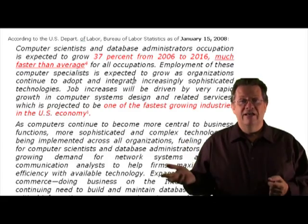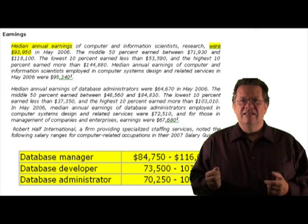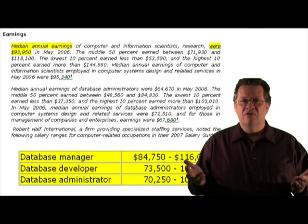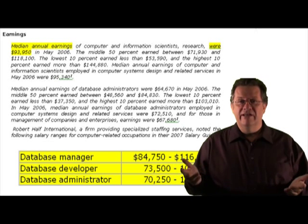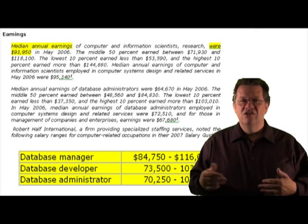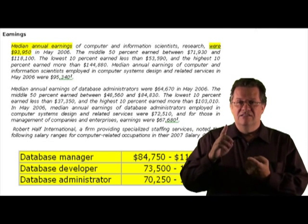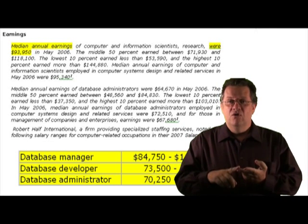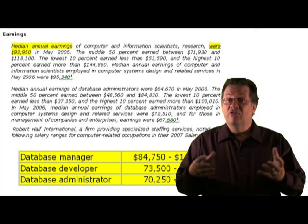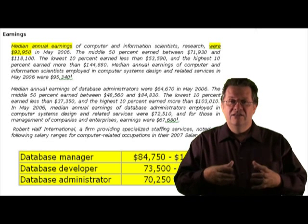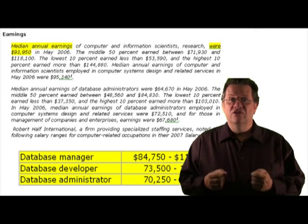If you scroll down to the next page, you'll see actual salaries for database personnel — it's about the $90,000 to $120,000 range. Of course, this could change, but the point is the database field is stable, it's growing, it's been around a while, and there will always be data and people needed to manage it. It is a career with excellent growth potential.